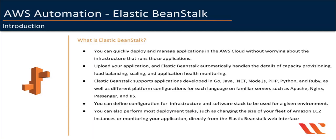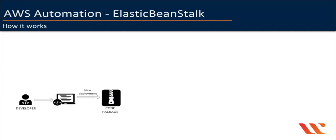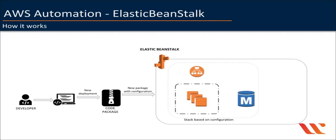Let's take a look at how it works. As a developer, you can develop your applications as per Beanstalk supported programming languages, and then you can package your code as a zip file or war file for Java. In AWS Beanstalk console or CLI, you can simply upload your application package along with the default configuration, or you can define your own configuration for the application stack. Once you submit, AWS Beanstalk will auto-provision all your required AWS resources such as EC2 with auto-scaling, Elastic Load Balancer, RDS, etc., within minutes.